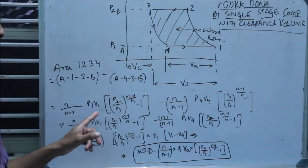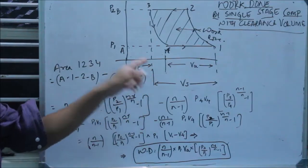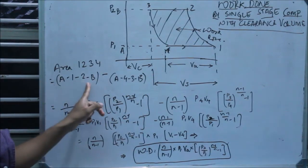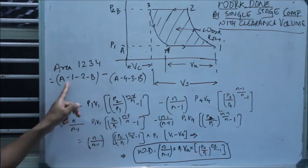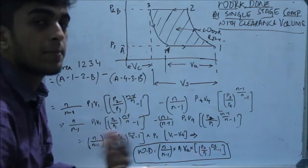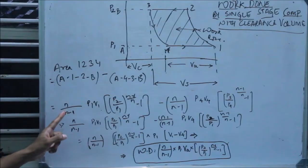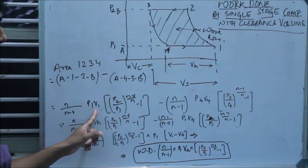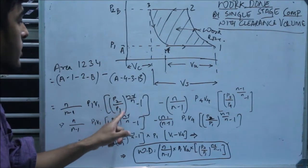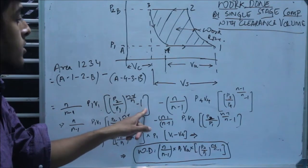Now, coming to the expression — area A12B minus A43B. What is the area under the curve for A12B? That is the work done by a compressor without clearance volume. That is given by N over (N minus 1) into P1 V1 into [(P2/P1)^((N-1)/N) minus 1].